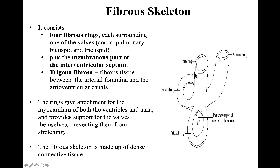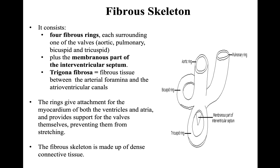These fibrous rings separate the muscles of different parts of the heart — for example, separating the atrium from the ventricles. The second structure is the membranous part, found in the interventricular septum between the right and left ventricles. The third structure is the fibrous triangle, which connects between the rings of the aortic and pulmonary valves.